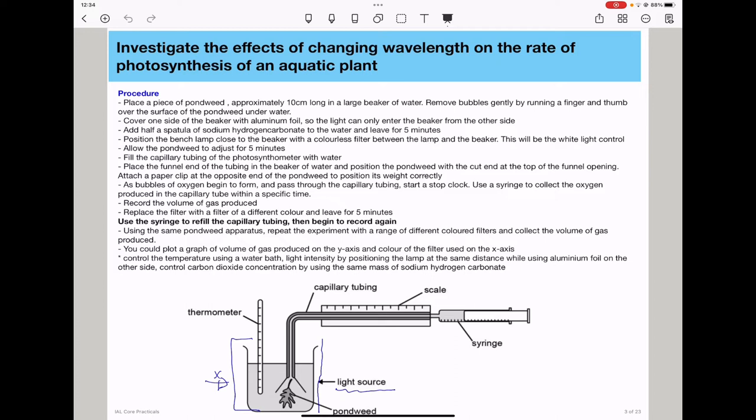And then you will leave for 5 minutes for the plant to adjust, and then you can begin to measure your results. So use the syringe to refill the capillary tubing and then begin to record again. In the next step, using the same pondweed apparatus, repeat the experiment with a range of different colored filters and collect the volume of gas produced.